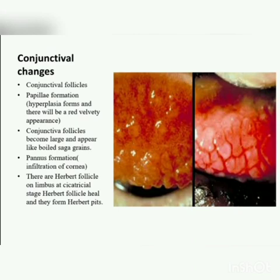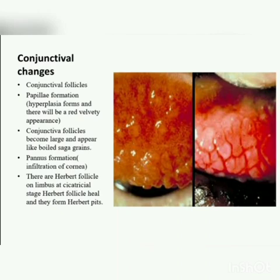As seen in this picture, you can see the conjunctival changes in trachoma. Conjunctival follicles are formed, papillae are formed, and hyperplasia develops, causing red and velvety appearances. Conjunctival follicles become large and appear like boiled sago grains. Pannus formation occurs due to the infiltration of the cornea. There are Herbert follicles on the limbus, and at the cicatricial stage, these Herbert follicles heal and form Herbert pits.